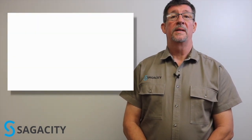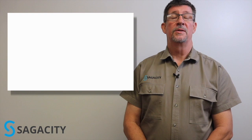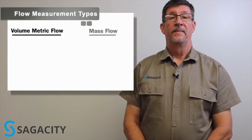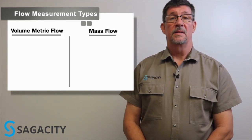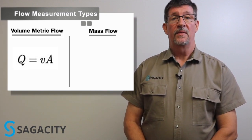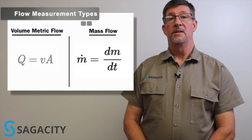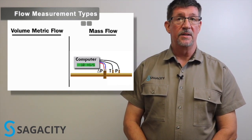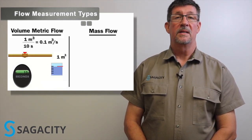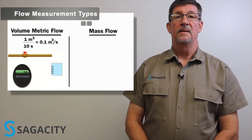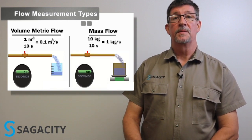No matter what flow technology you eventually land on, you're going to need to know what type of flow measurement you need to accomplish. There are two basic types of flow measurement: volumetric flow rate and mass flow rate. Volumetric flow rate is simply the velocity times the density of the fluid moving through the pipe. Mass flow rate takes into account the change in density. Volumetric flow rate is typically measured in cubic feet per minute or gallons per minute, while mass flow rate has units like pounds per hour or kilograms per minute.